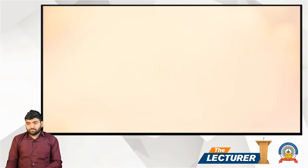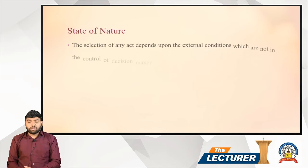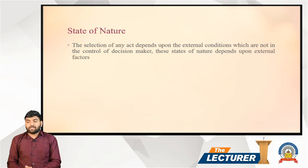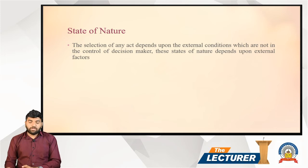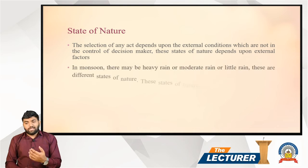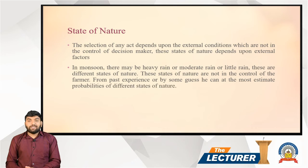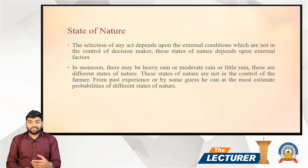The second element is State of Nature. The selection of any act depends upon the external conditions which are not in the control of the decision maker. For example, in the monsoon there may be heavy rain, moderate rain, or little rain — these are different states of nature. These states of nature are not in the control of the farmer; from past experience or by some guesses, one can at most estimate the probability of different states of nature.